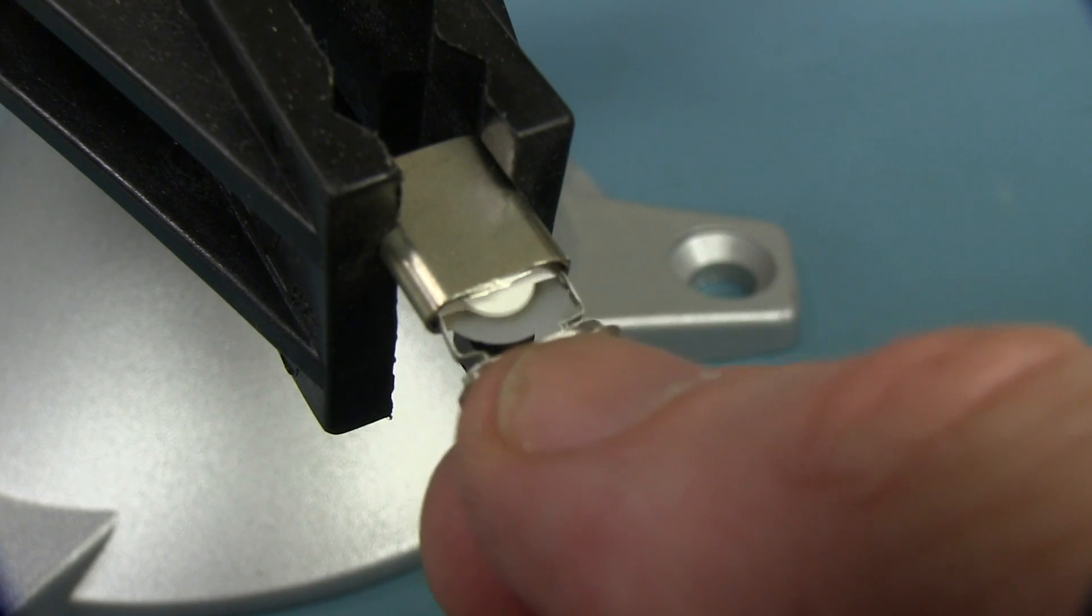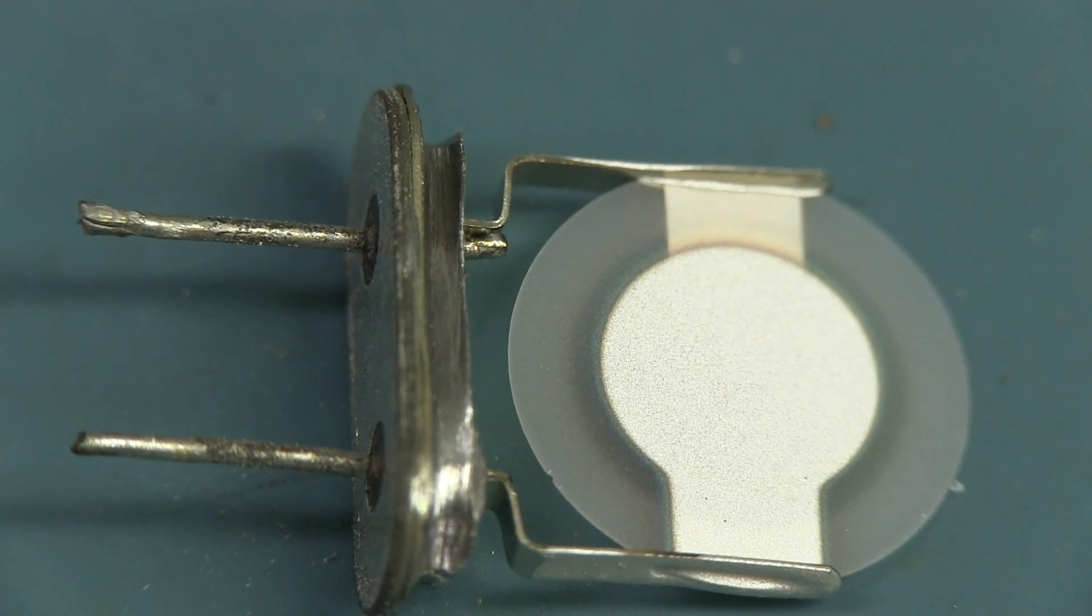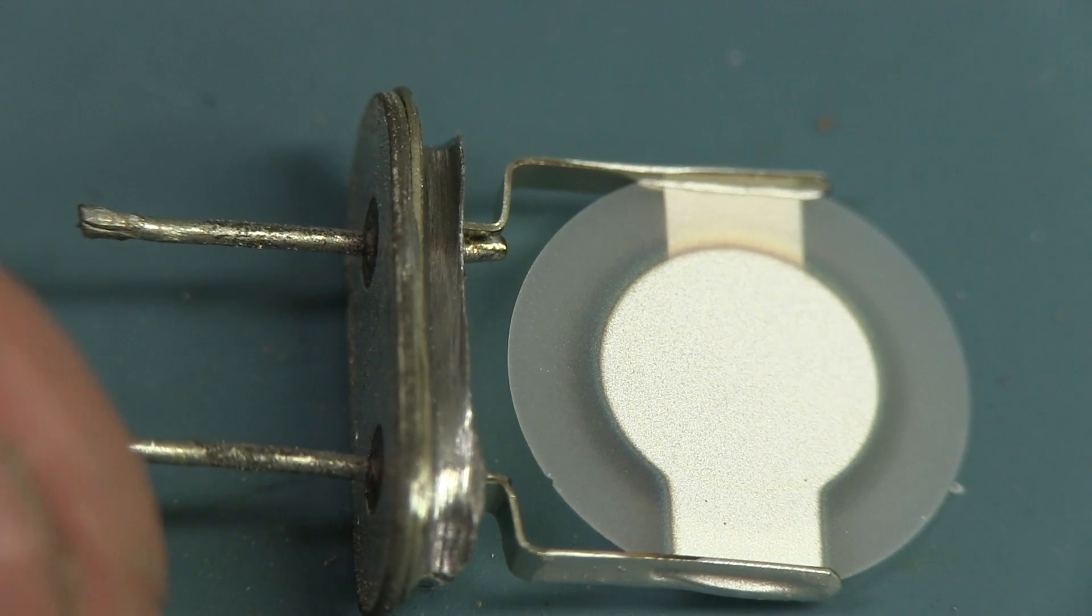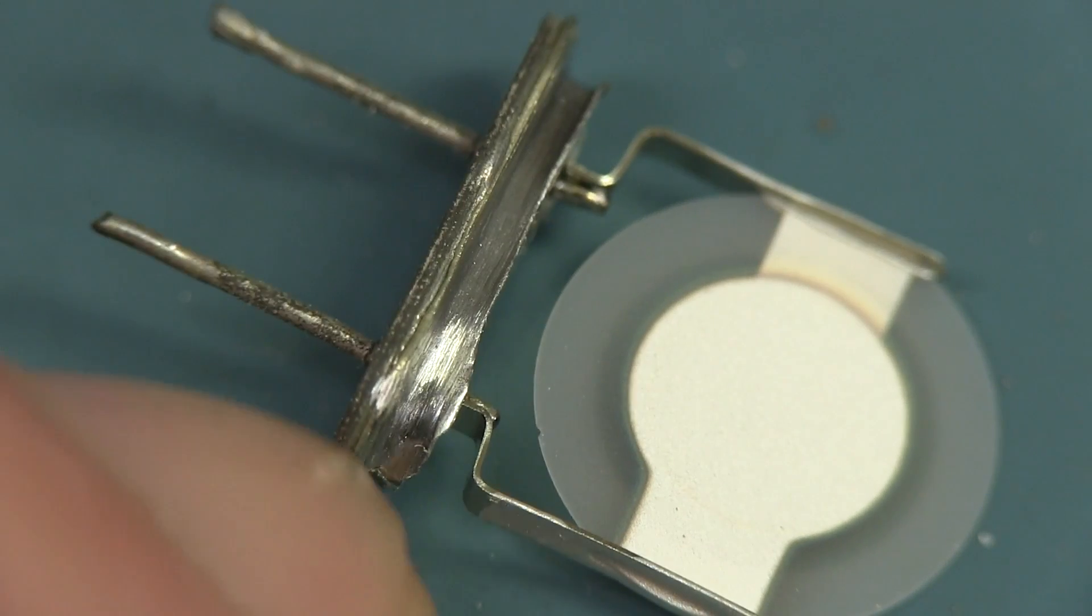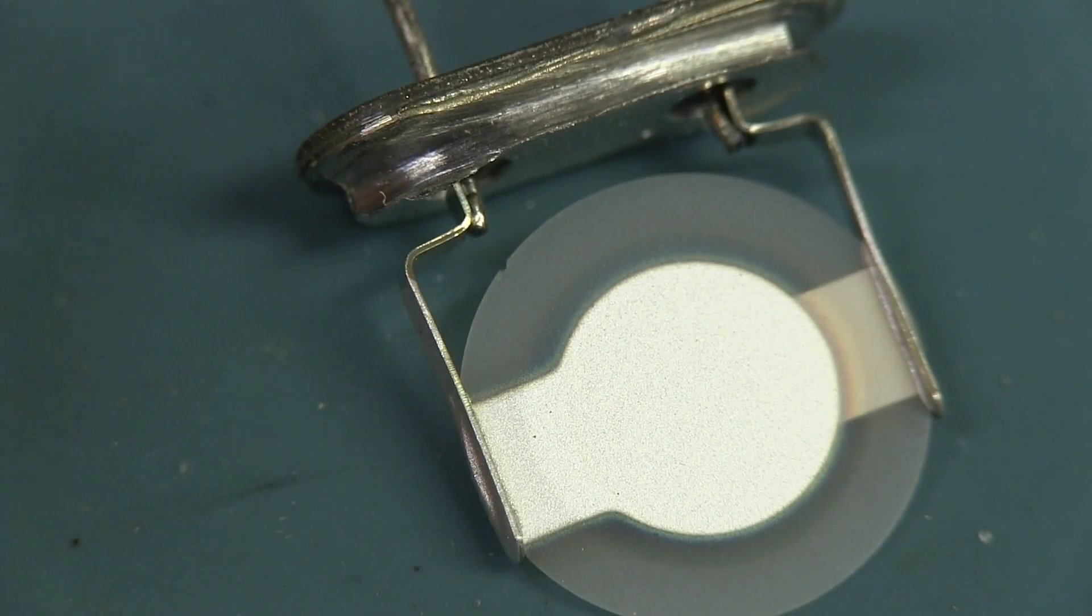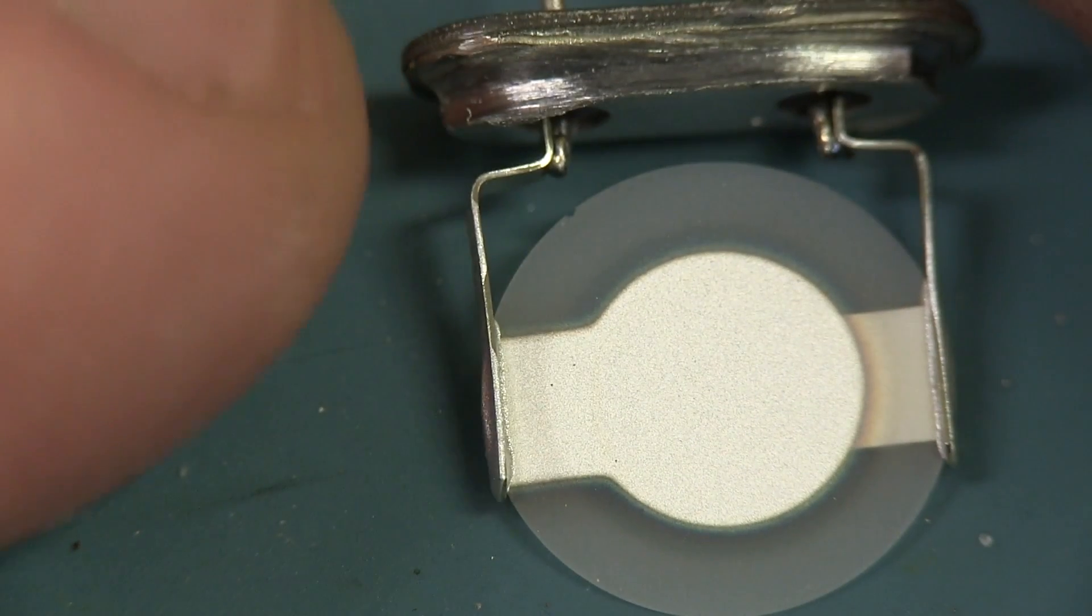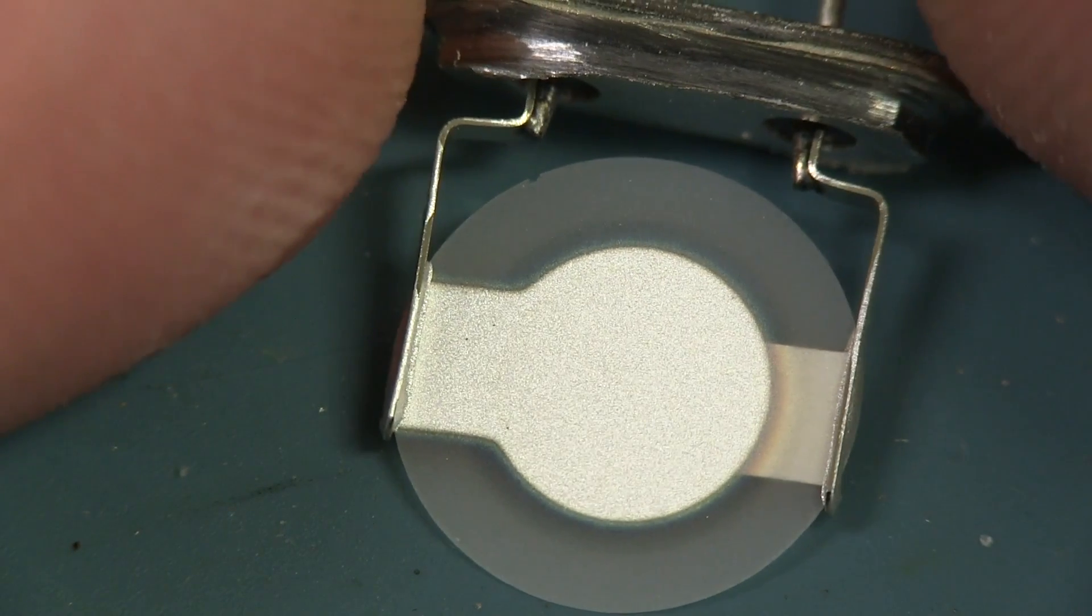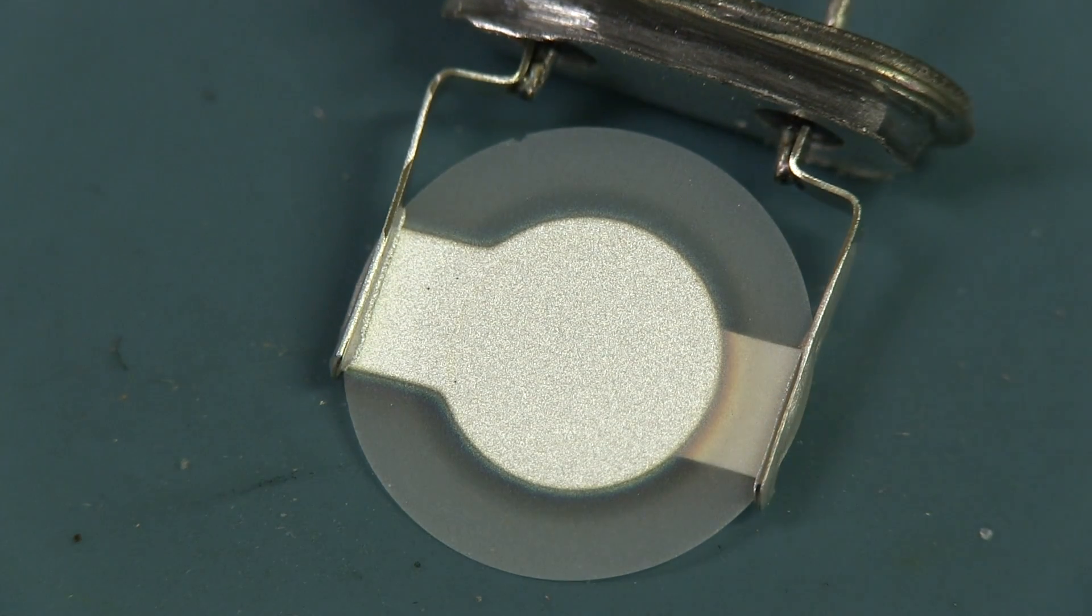And after you carefully slice one open, ta-da! We're in like Flynn. And that is what's inside your typical quartz crystal that you're used to using. There's a big circular slither of quartz there with a couple of electrodes on either side. And that thing vibrates, and that's how crystal oscillators actually work. But as you can see,